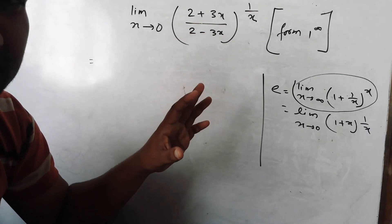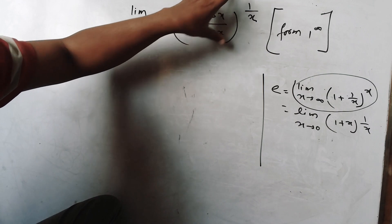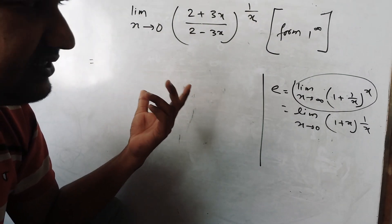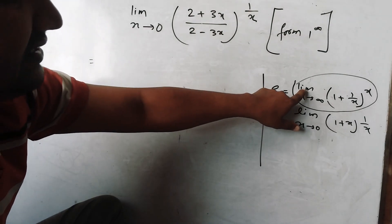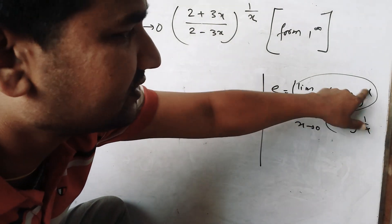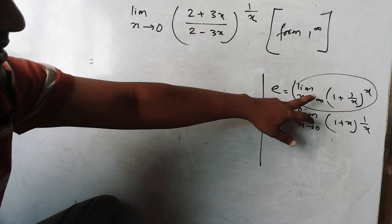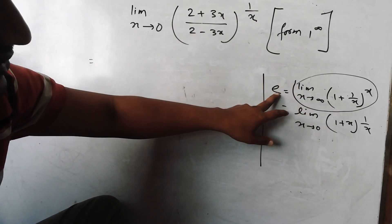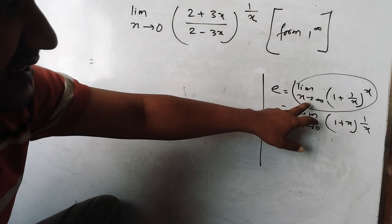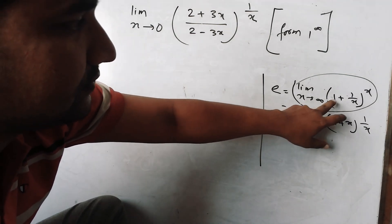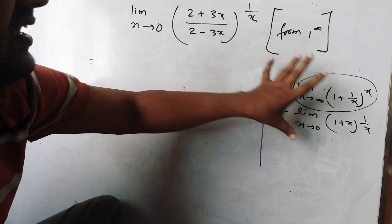You will get all indeterminate forms such as this. The standard result is: the limit as x tends to 0 of (1 plus x) to the power (1/x) equals e. Here, e is the base of the exponential function. As x tends to infinity, lim (1 + 1/x)^x = e; as x tends to 0, lim (1 + x)^(1/x) = e.